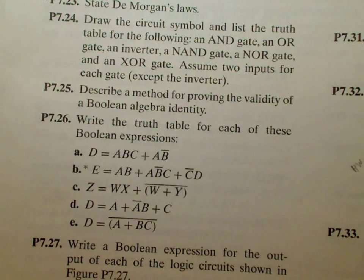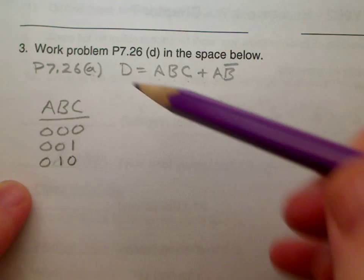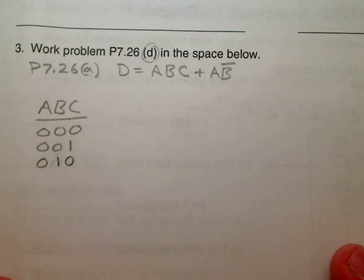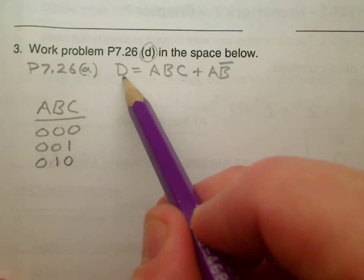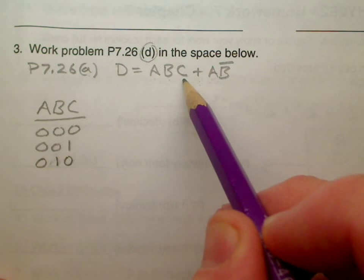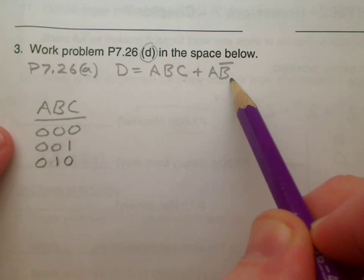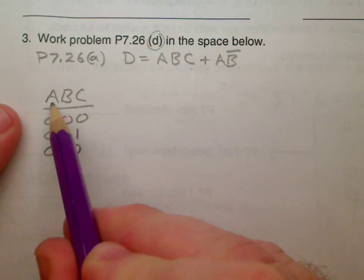If we look at the homework handout, you'll see that problem number three you're actually doing part D, and I want you to do part D in this space. But I'm going to work part A so you can see how it's going to go in this video. Here I have D equals A and B and C or A and not B. You begin this truth table by basically counting in binary.